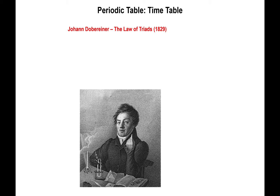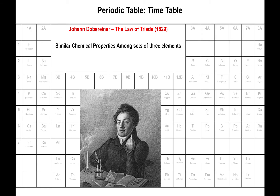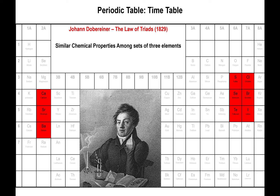Back in the early 1800s, Johann Döbereiner came up with something known as the law of triads. Simply stated, the law of triads was the observation that there were certain elements — a set of three elements per group — that had similar chemical properties to each other. Looking at the periodic table as we know it now, what Johann observed was that calcium, strontium, and barium, which now lie in group two of the periodic table, had similar properties to each other.